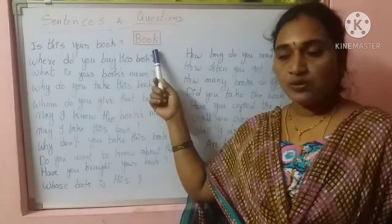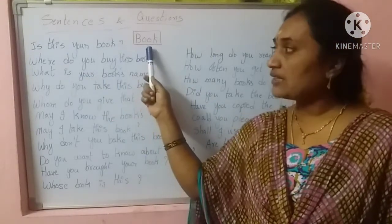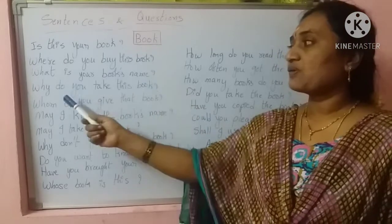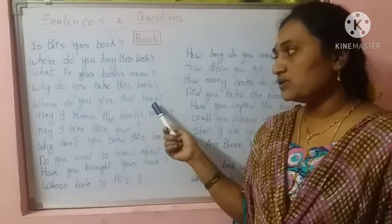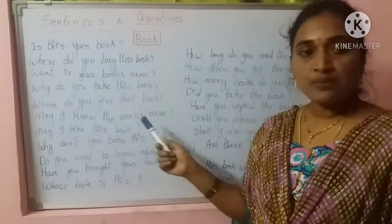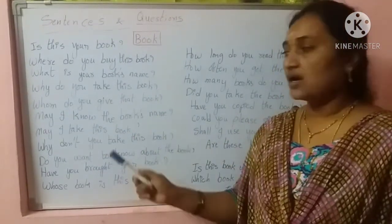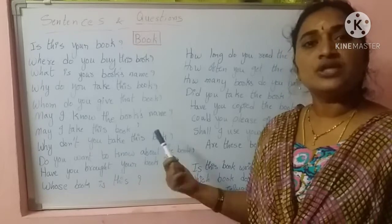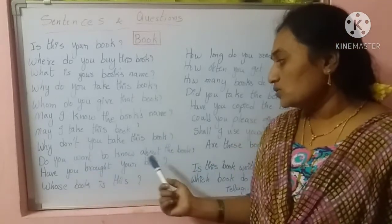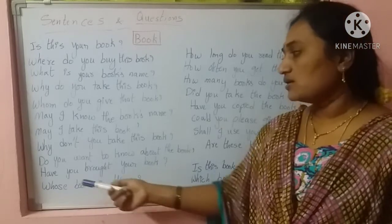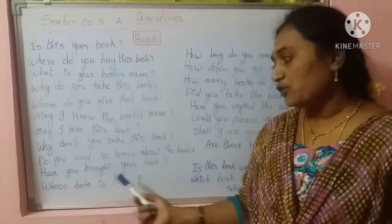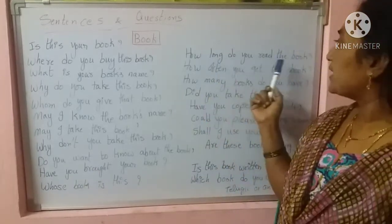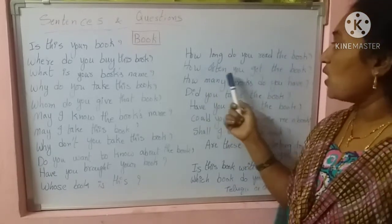For example, with the object 'book': Is this your book? Why do you take this book? Where do you buy this book? May I take this book? Why don't you take this book? Do you want to know about the book? Have you brought your book? Whose book is this? How long do you read the book? How often do you get the book?